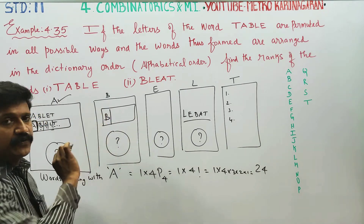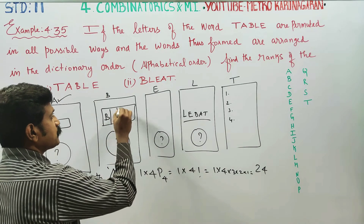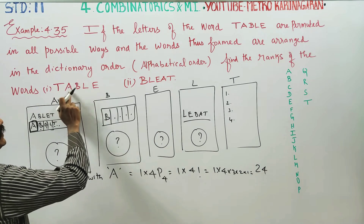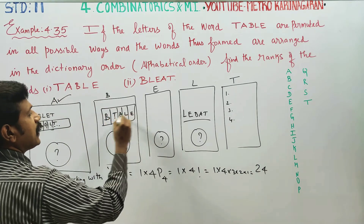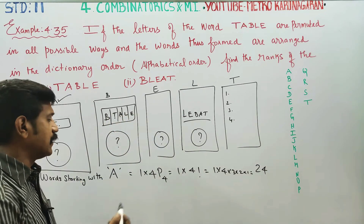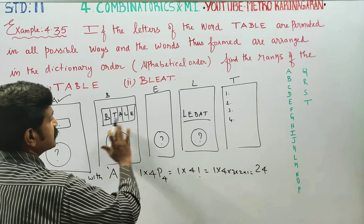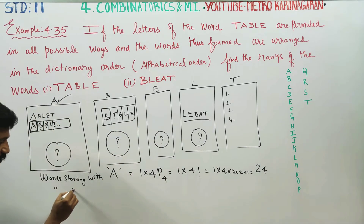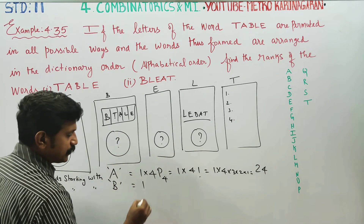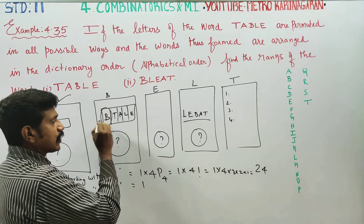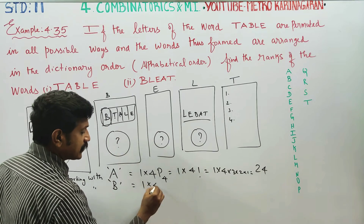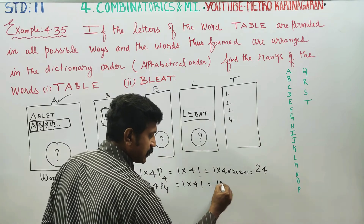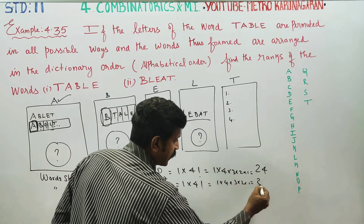B is fixed. Page starts with B. There are 4 remaining places. The remaining letters T, A, L, E fill those 4 places. Words starting with B also equal 24.